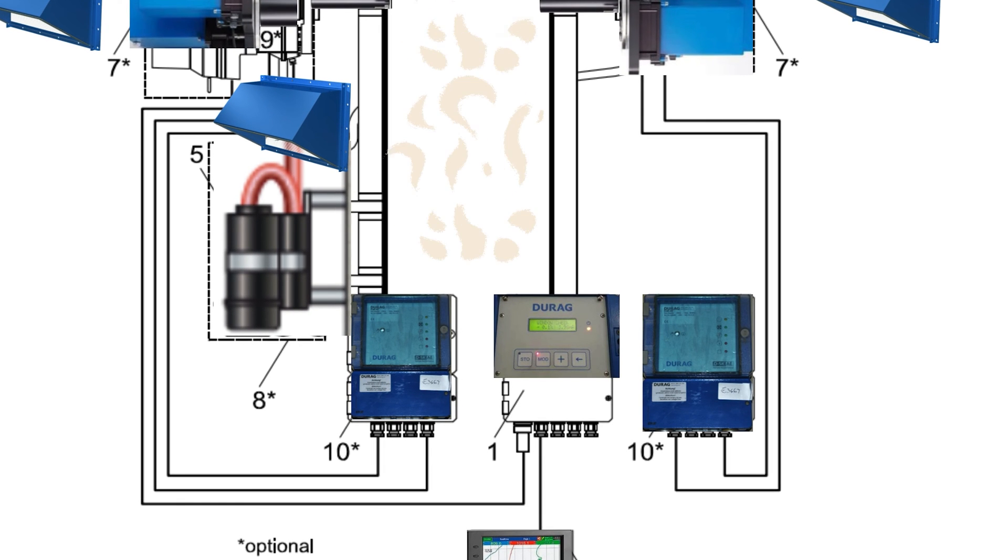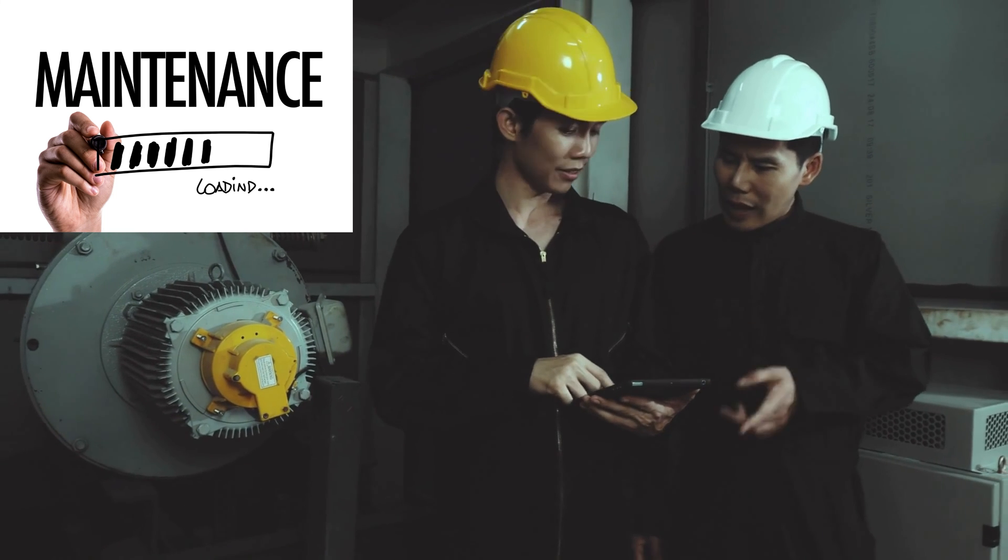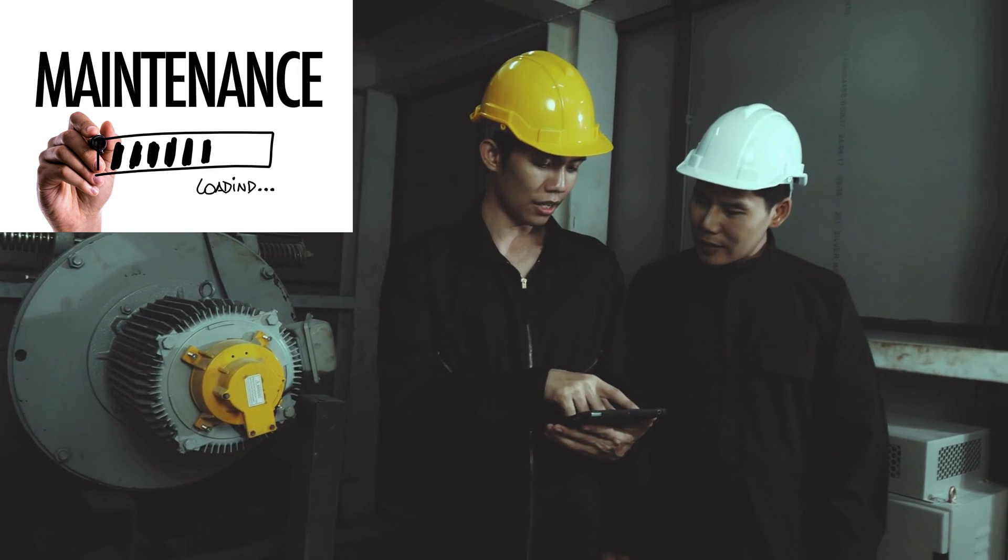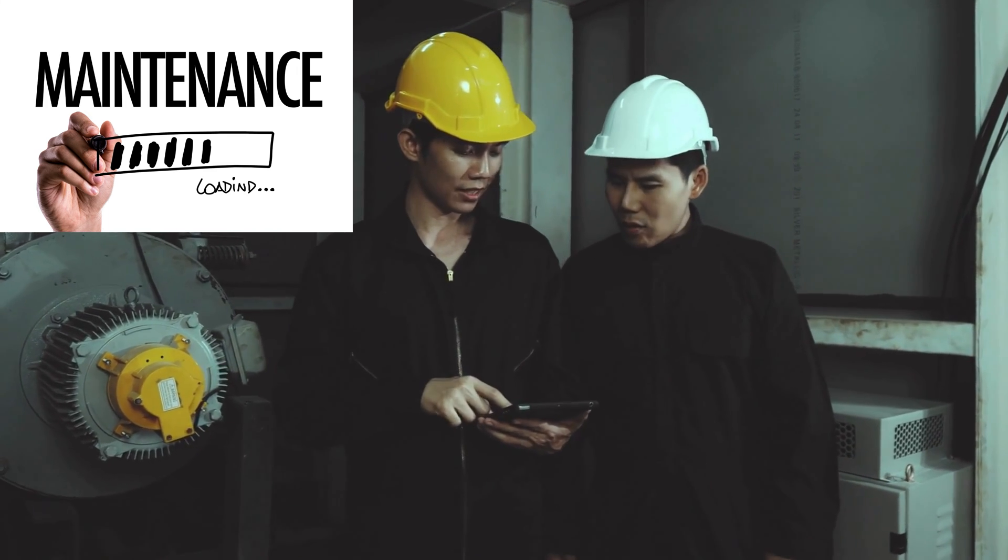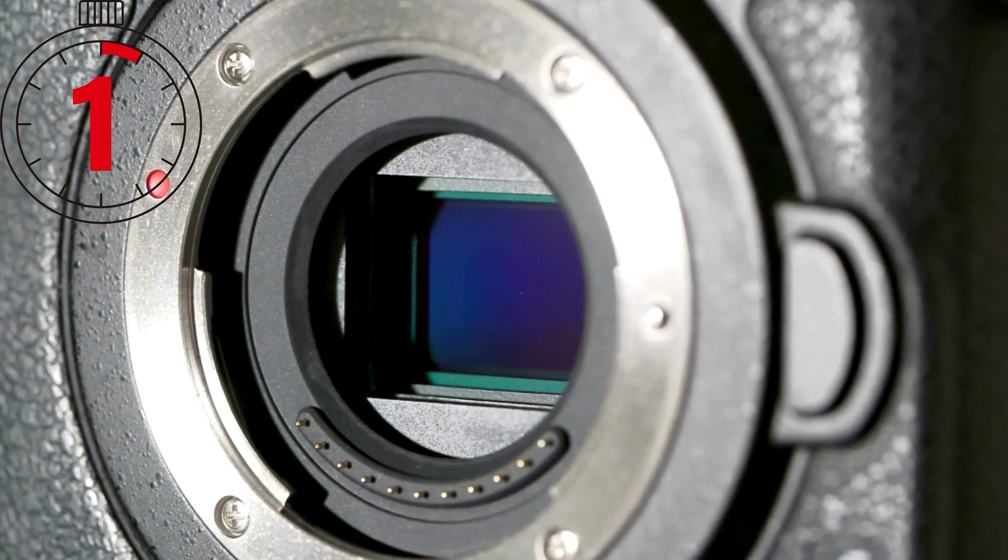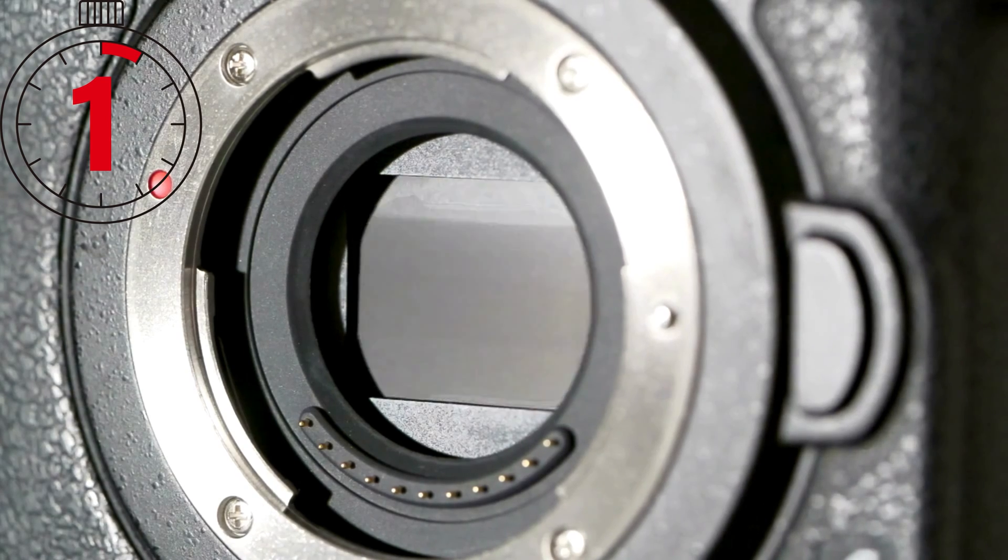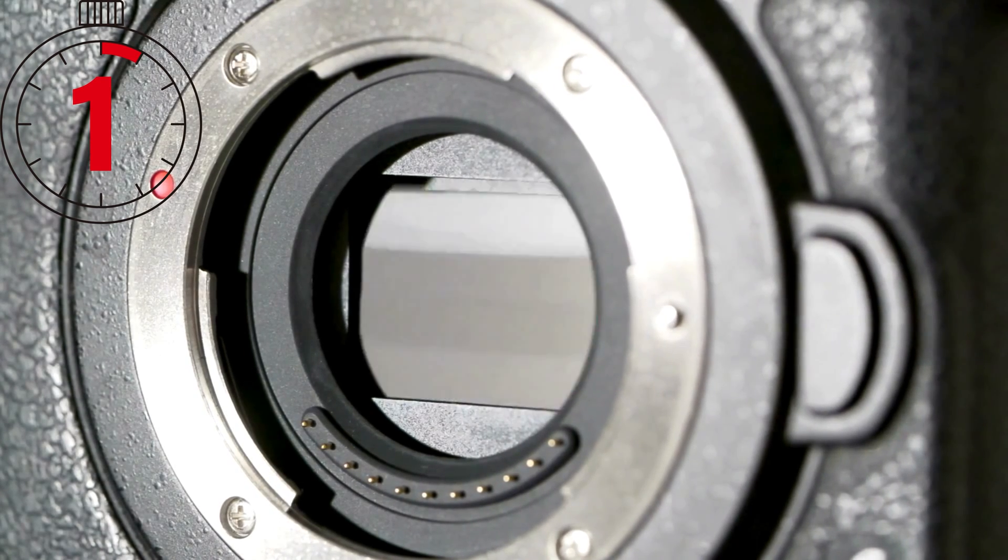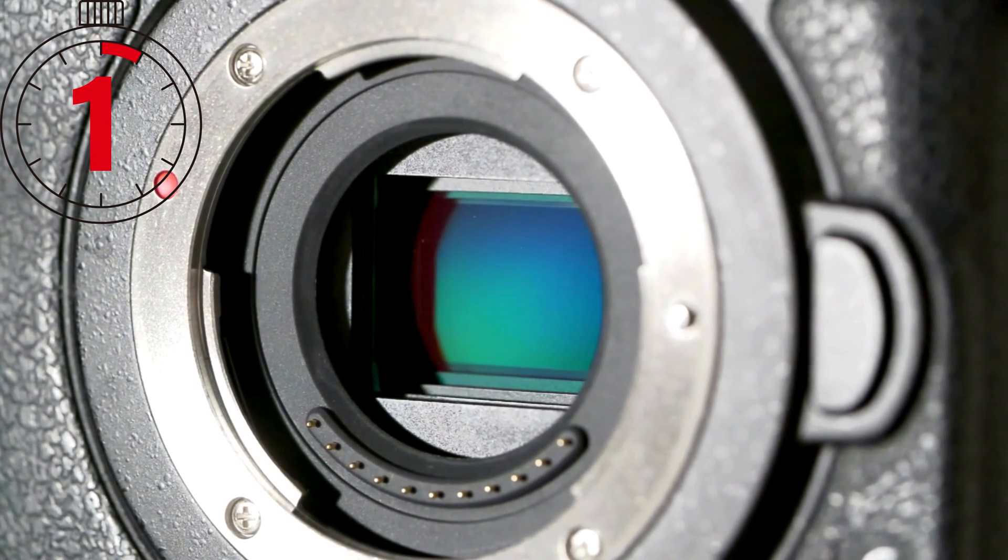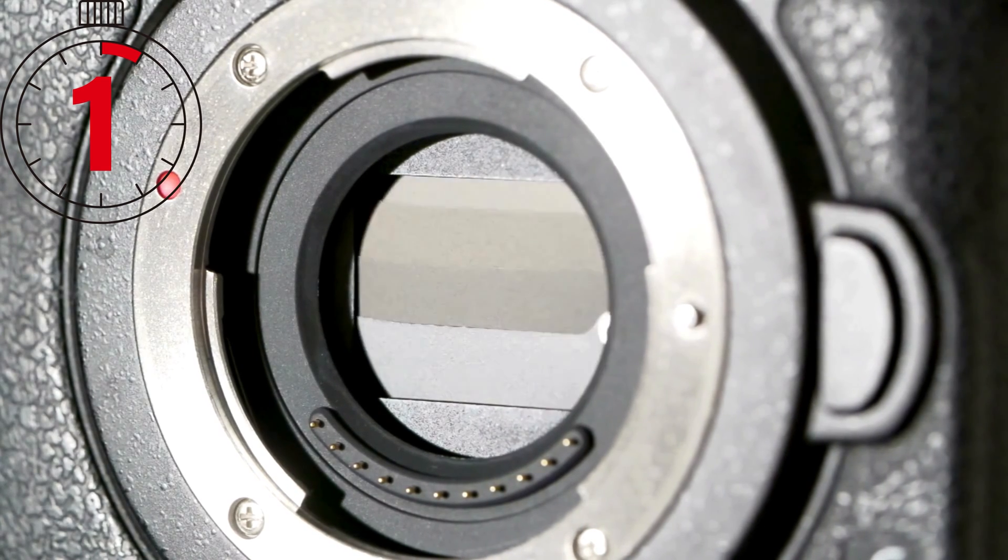Following points to be checked as routine maintenance of system. Cycle can be minimum one or three months depending on site condition. First, clean transceiver reflector window and zero point reflector with soft cloth. Water, alcohol, or glass cleaner can be used to clean optics. Second, clean external parts of unit.